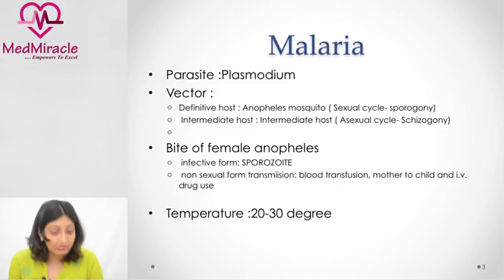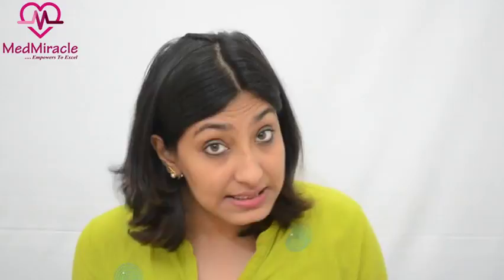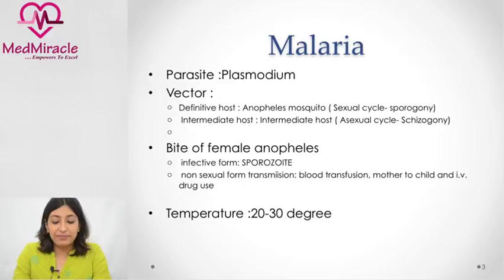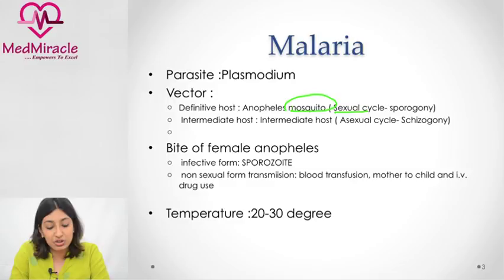Coming to malaria — the parasite is Plasmodium and the vector is the female Anopheles. This female Anopheles mosquito has a sexual cycle in the mosquito and an asexual cycle in man. The intermediate host in malaria is man, which has the asexual cycle, also known as schizogony, and the sexual cycle is known as sporogony.